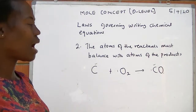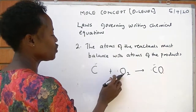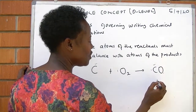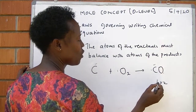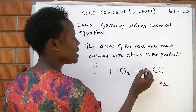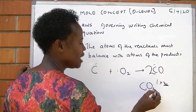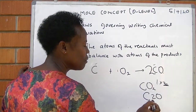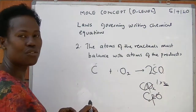On the product side, one times one gives one atom of oxygen. But on the reactant side we had two. To balance the one on the product, we look for a value to multiply by one to get two — that value is two. Always bring this multiplier in front of the molecule. Do not put it as a subscript, as that would change the molecule to carbon dioxide, and never divide the molecule. Always introduce the coefficient at the front.